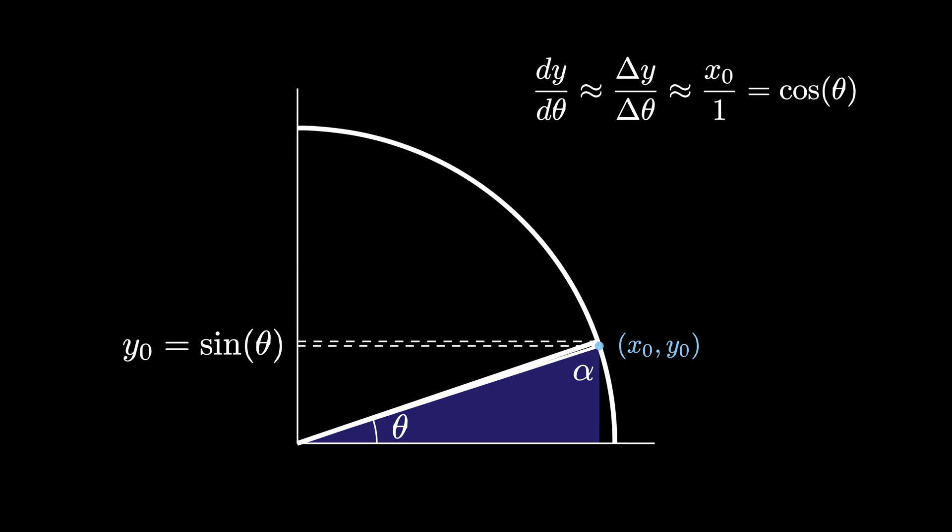What that means is that as delta theta goes to zero, we see that dy d theta, which is equal to the limit as delta theta goes to zero of delta y over delta theta, is actually equal to x0 over 1, which is equal to cosine of theta.